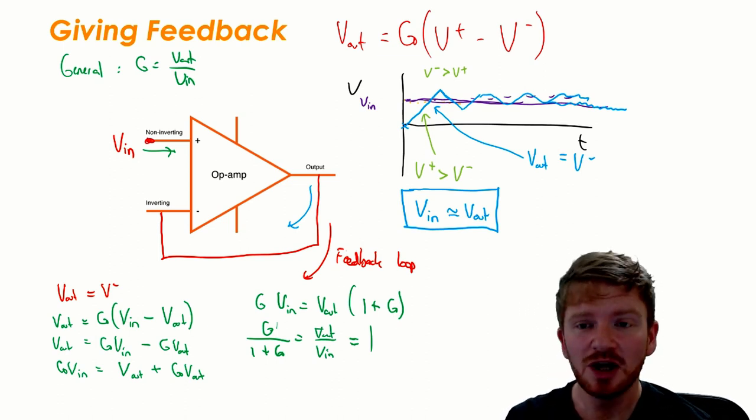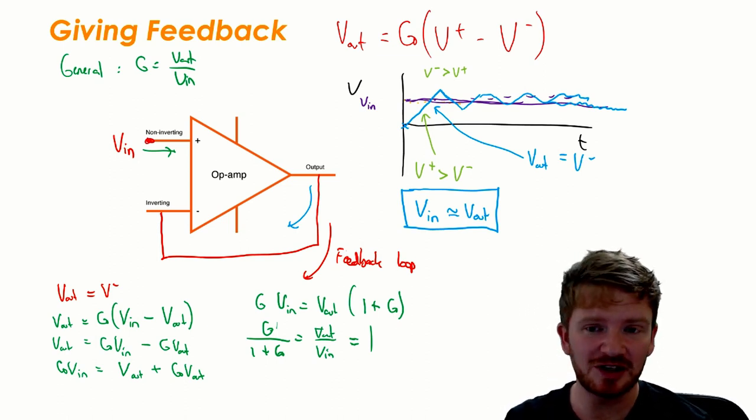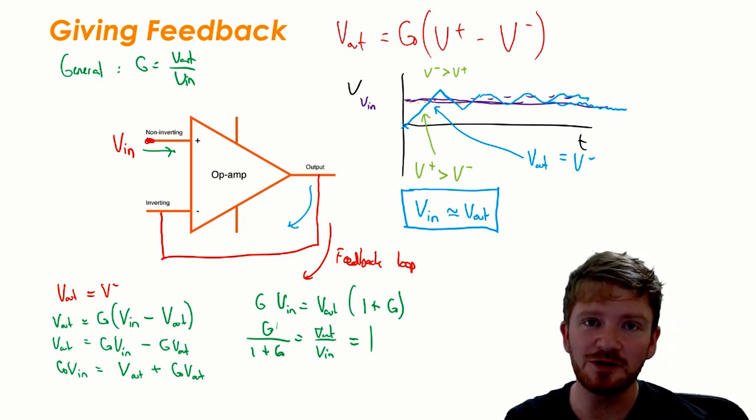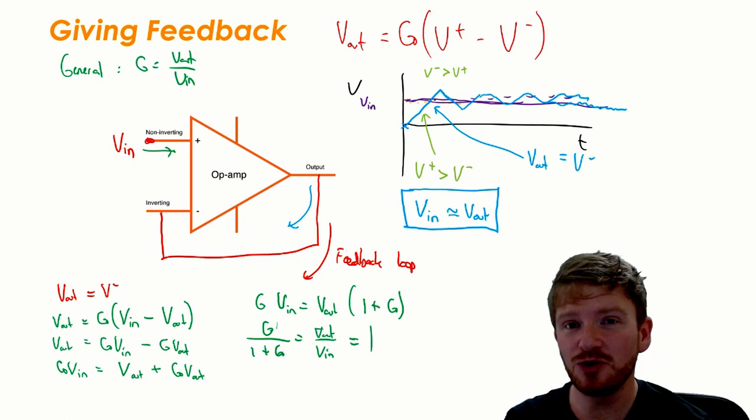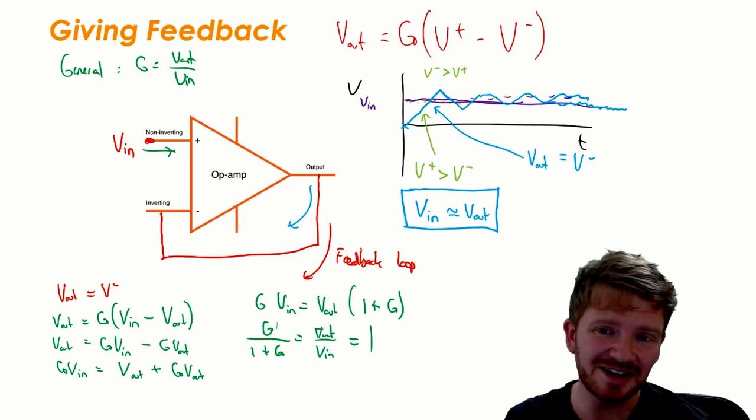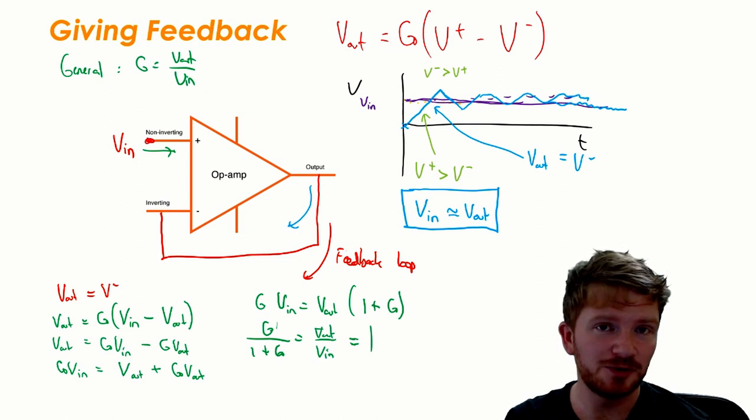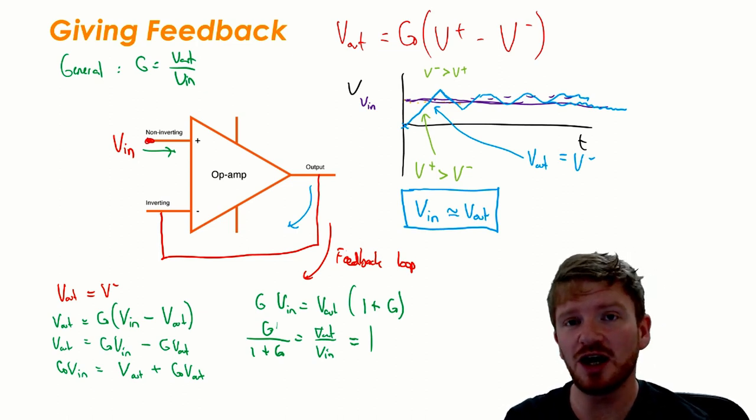That might not sound useful but remember one of the features of an op amp is it can supply quite a lot of current. So a classic example here might be if I have a microphone that produces a reasonable voltage but tiny tiny current so it doesn't have much power. I can use an op amp to increase that because the op amp can give us the same voltage but with a much much higher power.